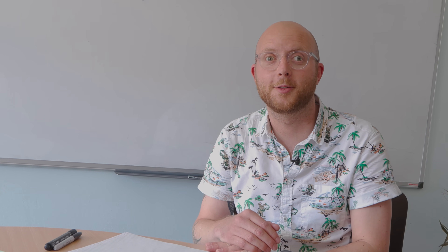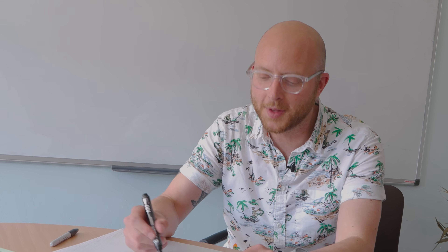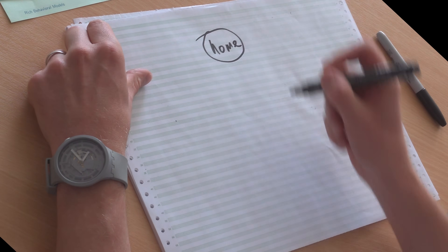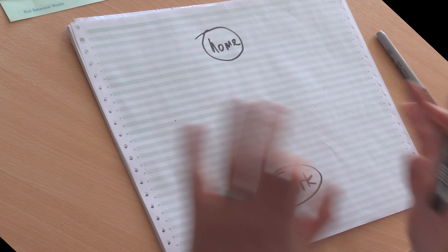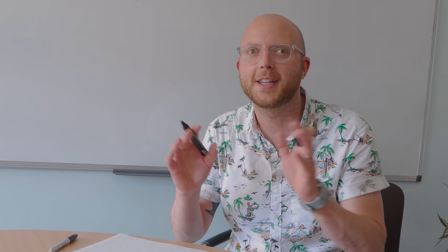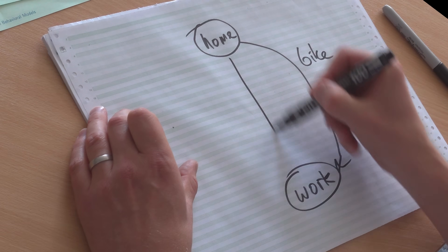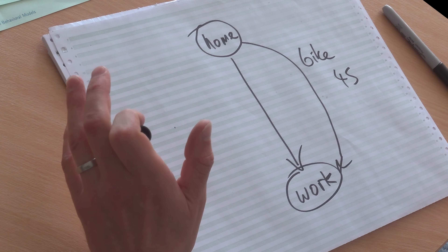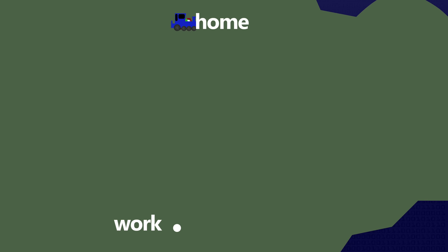Probably the best place to start is a shortest path algorithm. I'm going to try and draw it just to warm up. You can imagine that you're starting off at home and you're trying to get to work. In the simplest shortest path problem, you've only got one action. You can go by bike and that might take 45 minutes, or you can go by car and that might take 30 minutes, or by train which takes 35.